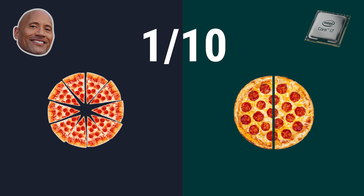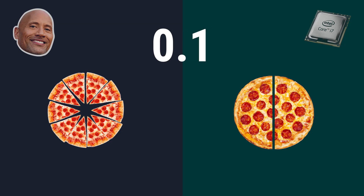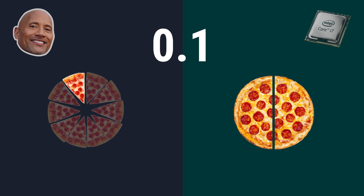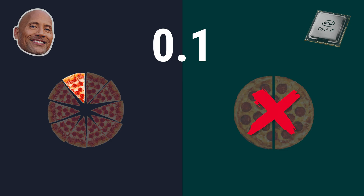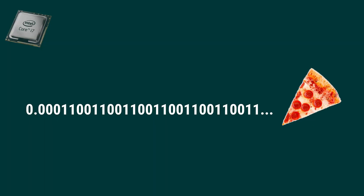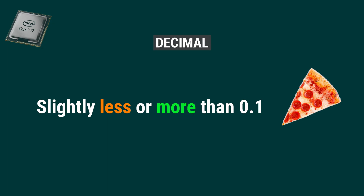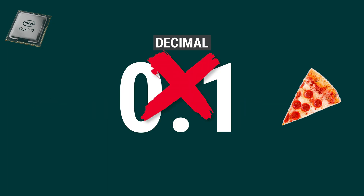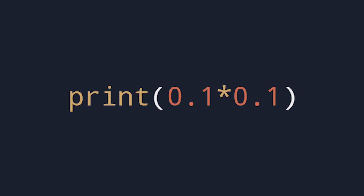Let's try to divide by 10, which is equal to 0.1. This will be pretty easy for us, but for computers it will end up with something like this — and this is in binary. So in decimal, it will be slightly less or more than 0.1, but it will never be exactly 0.1. So next time you ask a computer something like this and it gives you a really close approximation, you will know why.